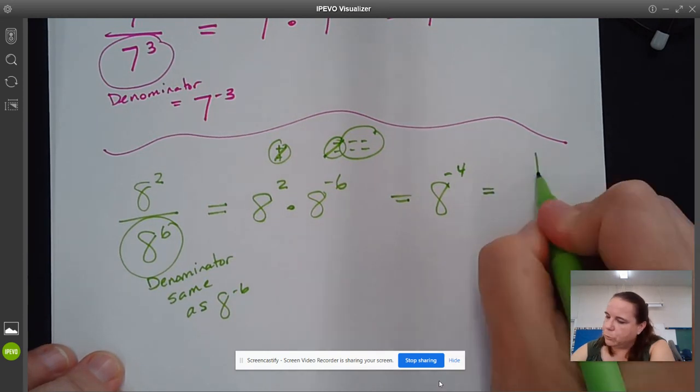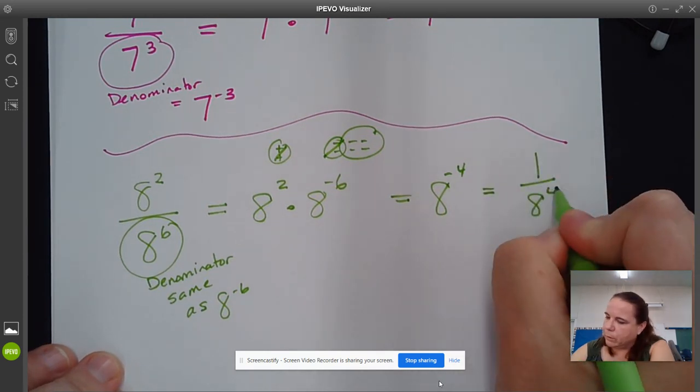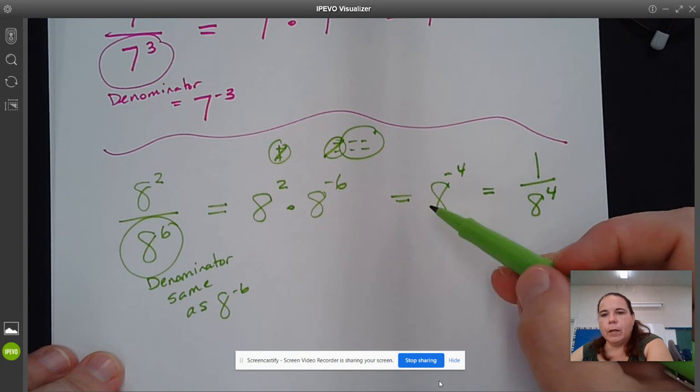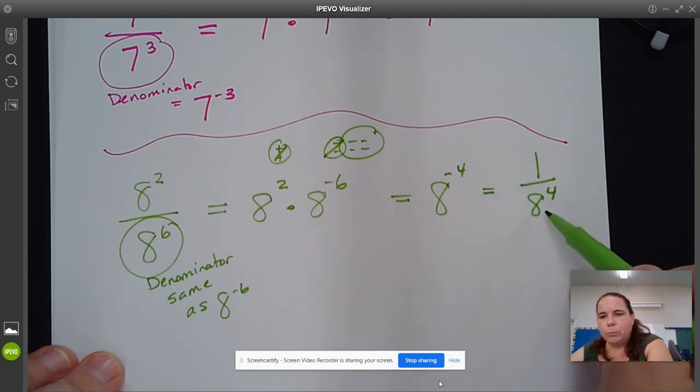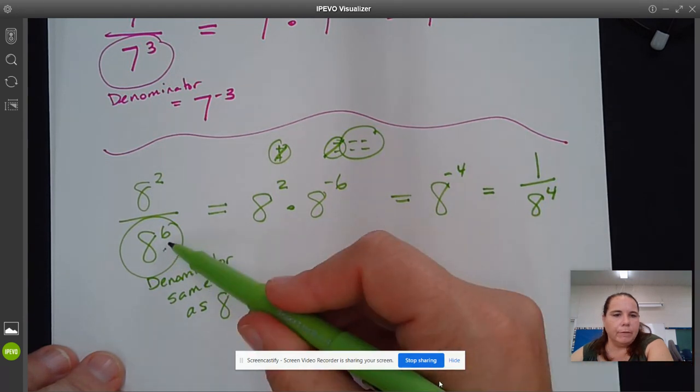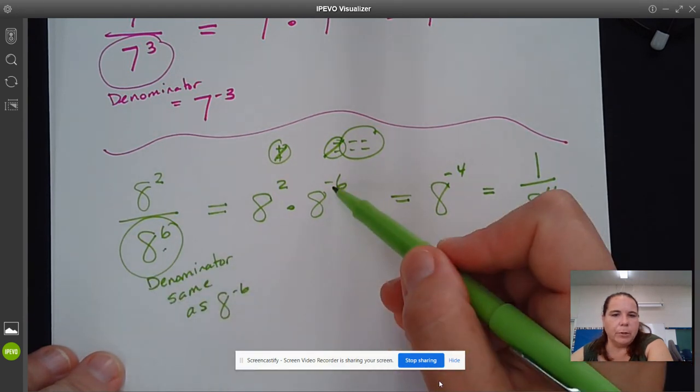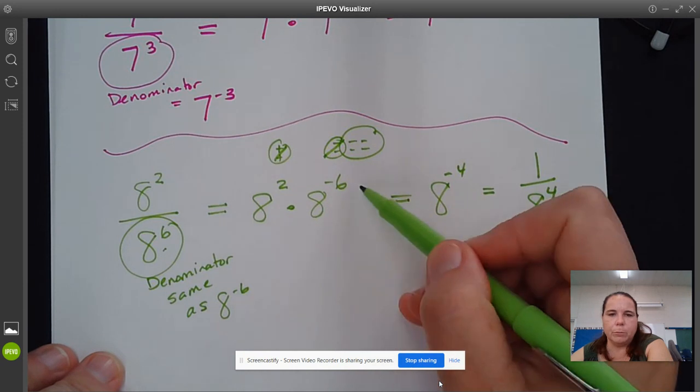Which is the same as 1 over 8^4. So understanding how those negative exponents show division - knowing that if it is division, we can change it to a negative exponent if that makes us feel more comfortable. It's a different way of solving the problem.